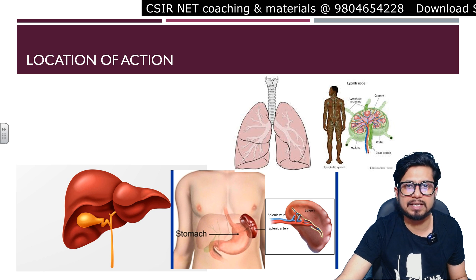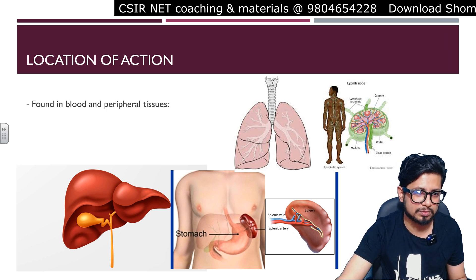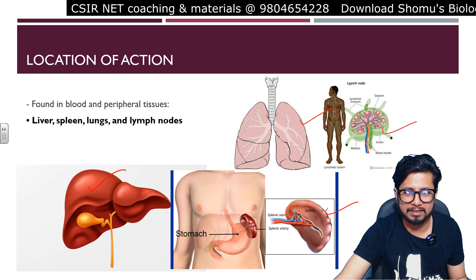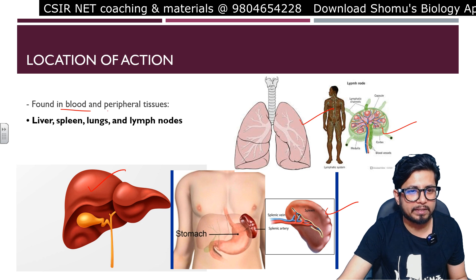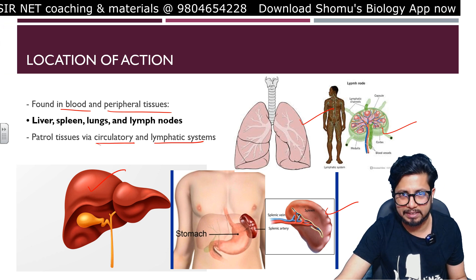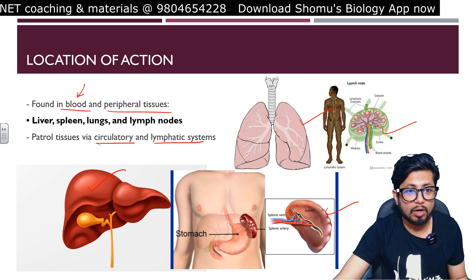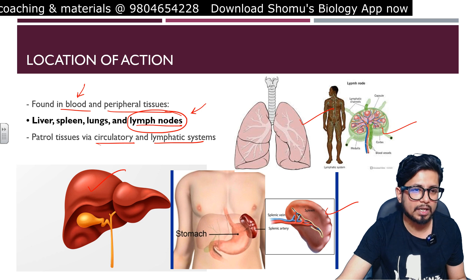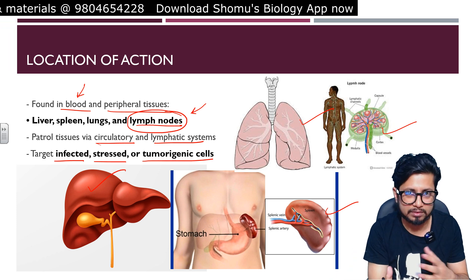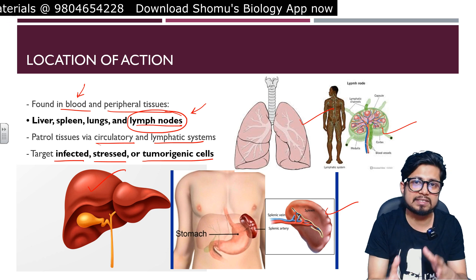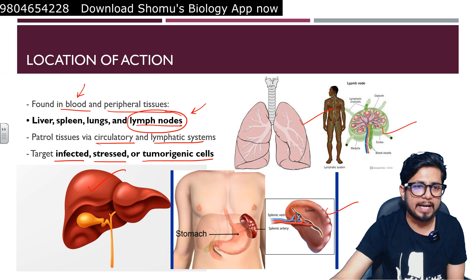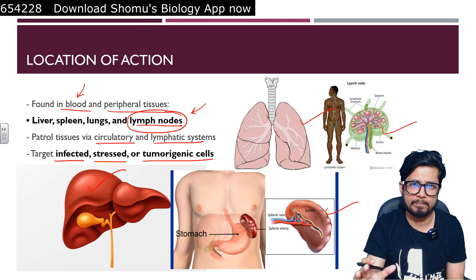Natural killer cells are found in various tissues including the liver, spleen, lungs, and lymph nodes, as well as in the blood and peripheral tissues. They patrol tissues via the circulatory or lymphatic systems. They target infected cells, stressed cells, or tumorigenic cells — whether a cell is infected by a virus, bacteria, or any pathogen, is under stress, or is tumorigenic and capable of forming a tumor or cancer, natural killer cells kill them on sight.